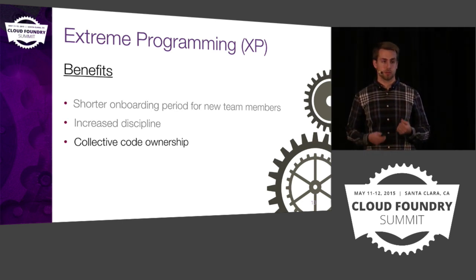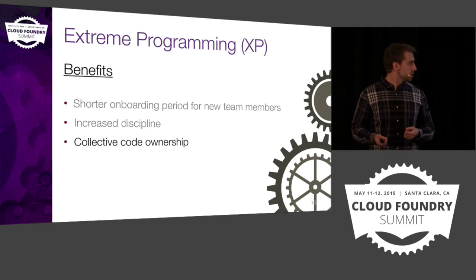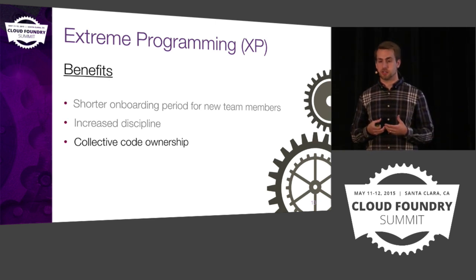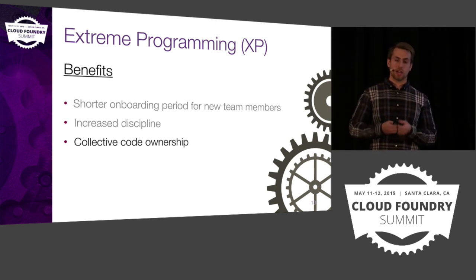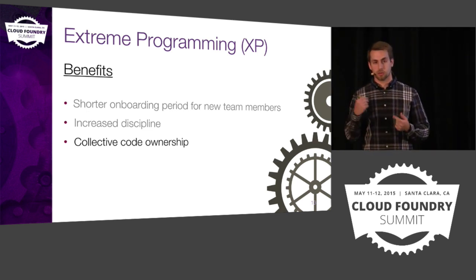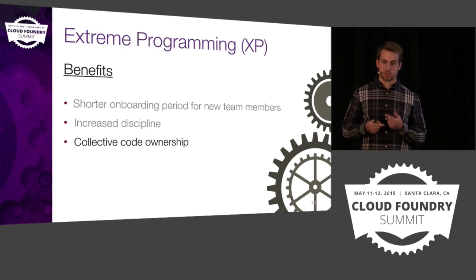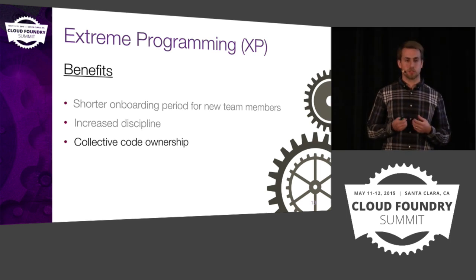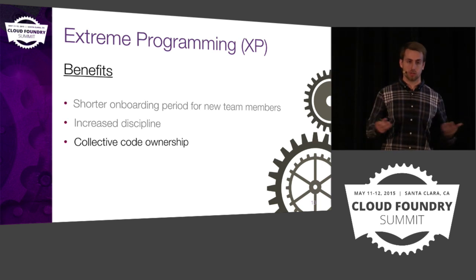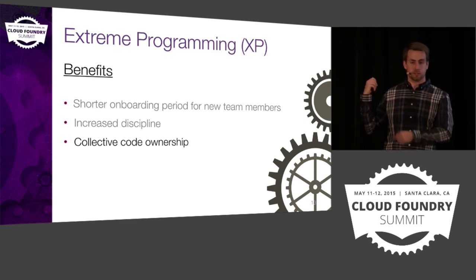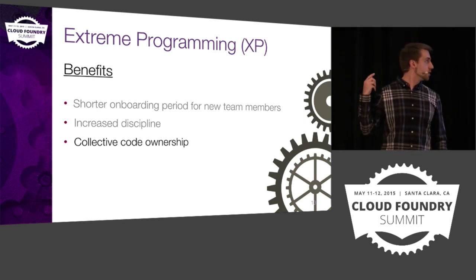Collective code ownership is something we really stress at Pivotal and Cloud Foundry — everyone owns the code base on the team. There's no 'I have this section, I'm in charge of this algorithm, and it's mine.' Everyone rotates through all pieces of the code base, all stories, all features, all bugs as much as possible. This really helps reduce blame and increase everyone's understanding, so you don't end up with 'this guy left and I have no idea what that 3,000 lines is supposed to be doing.'